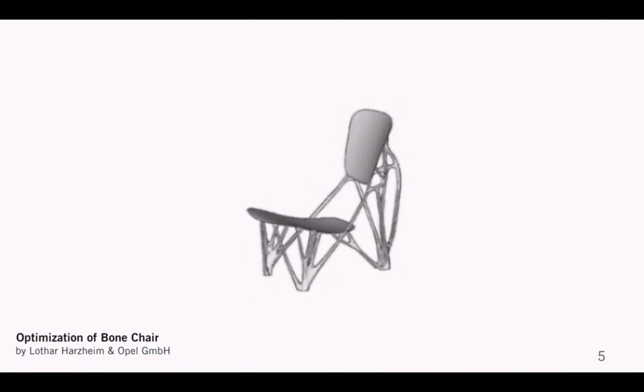This optimization process is an iterative process. During these iterations, the material that is not relevant for this mechanical load is automatically removed. This process is very similar to how our bone reacts to mechanical load. Because of this natural adaptation process, what remains is a very elegant structure to support the mechanical load in the best way.